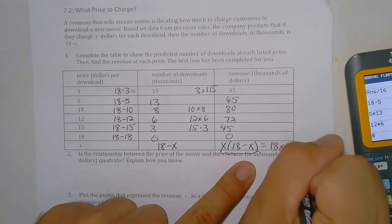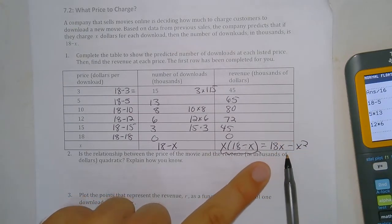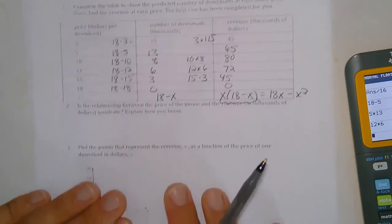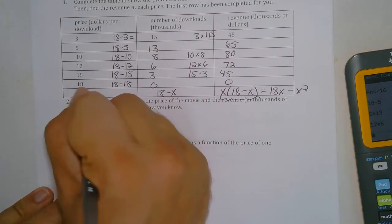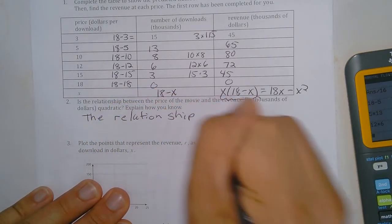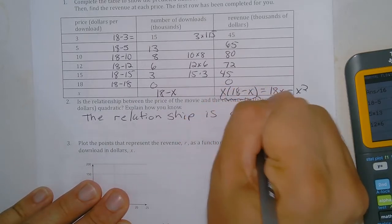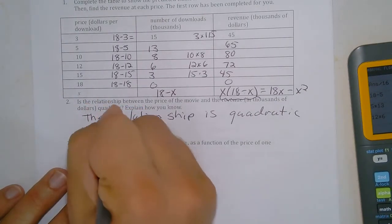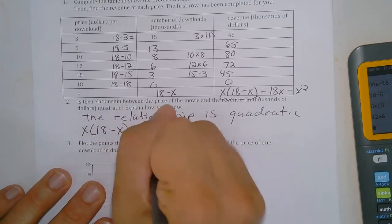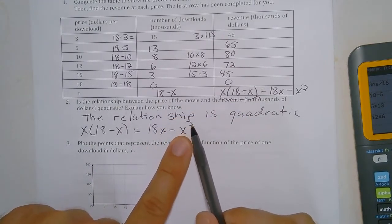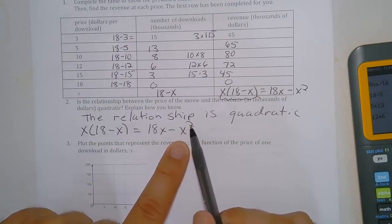So we can see that this function here is quadratic because the revenue function is really 18x minus x squared, and that x squared term makes it quadratic. So the relationship is quadratic. And what we can say is that x times 18 minus x is going to equal 18x minus x squared, and because the variable here or the term here is squared, it's quadratic.